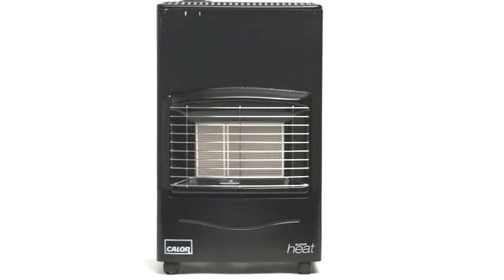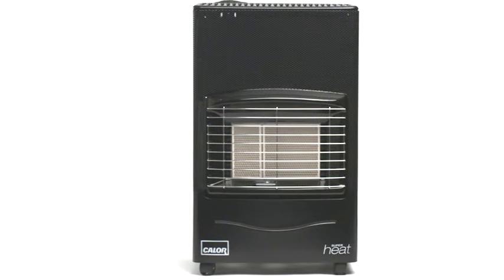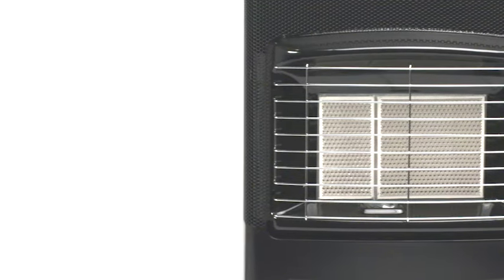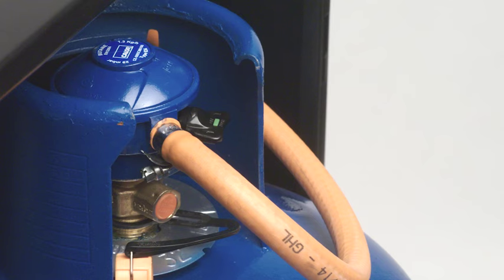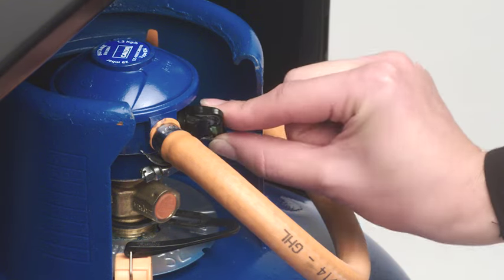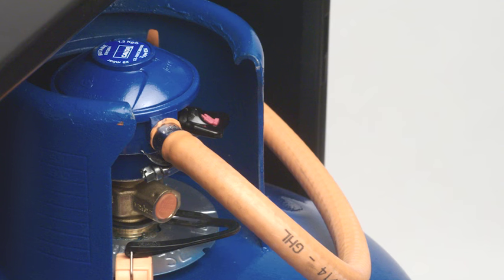Once you have safely connected your gas bottle, you will be ready to turn on your portable gas heater. Begin by turning the gas on at the bottle. Locate your regulator at the back of your portable gas heater. Turn the switch until the red flame symbol is facing upwards, indicating that the fuel is ready to power your portable heater.